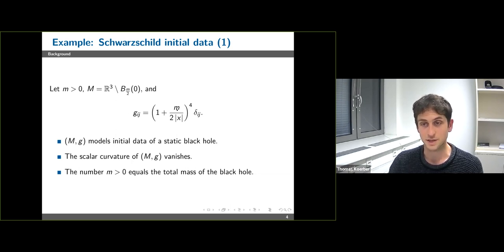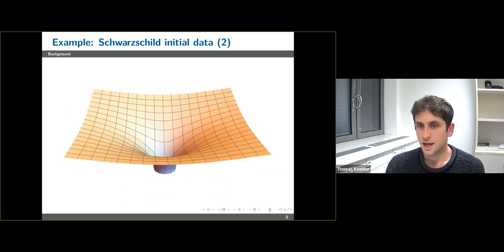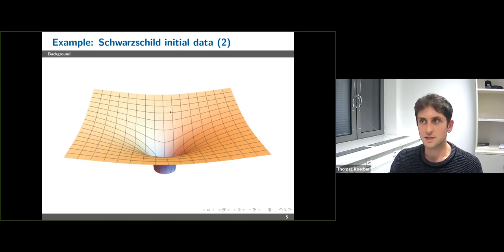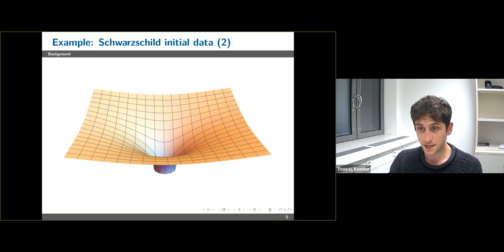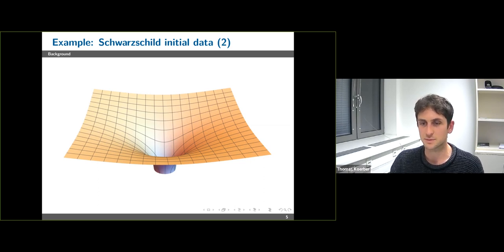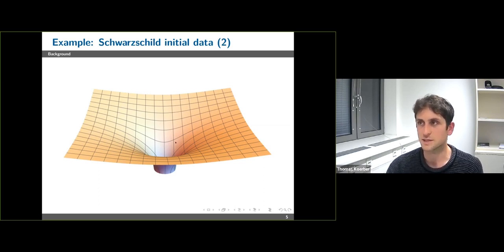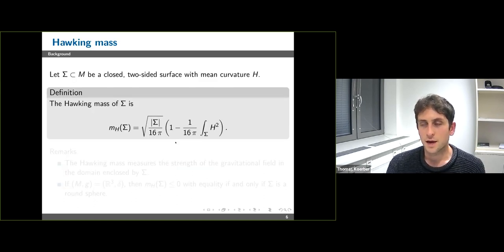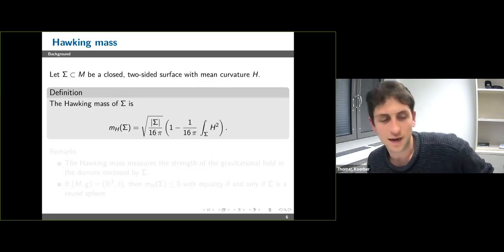For this particular example, the total mass gives you the correct quantity. Here's an illustration of the Schwarzschild space — you can view this as a two-dimensional shadow of the three-dimensional initial data set. The further you go out to infinity the more flat the space becomes, corresponding to the Schwarzschild space being asymptotically flat, whereas the closer you get to the horizon the more curved space becomes.